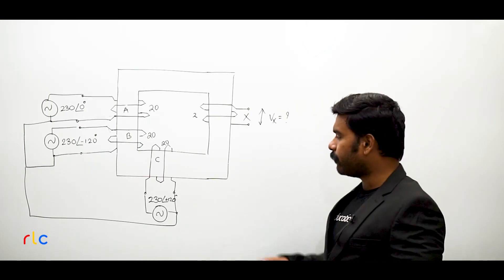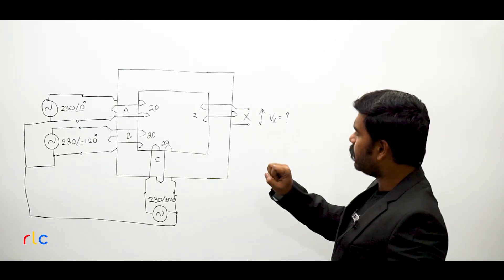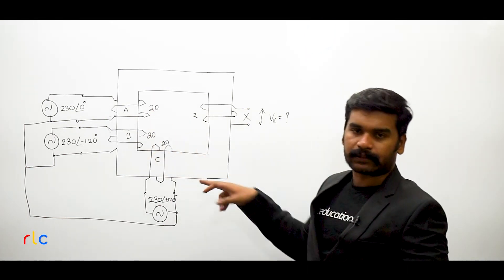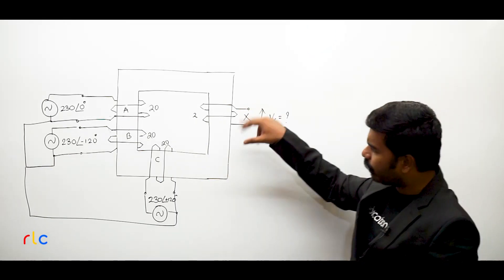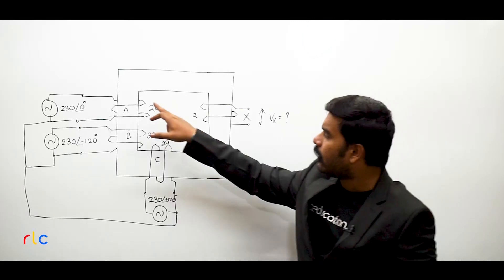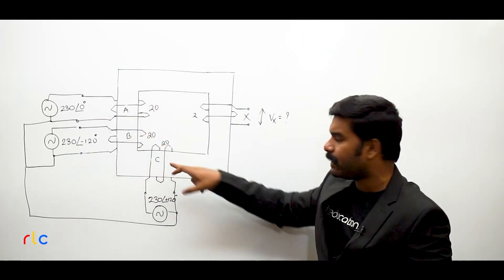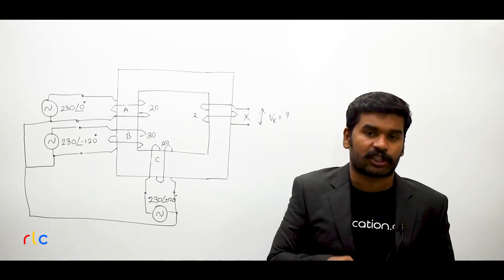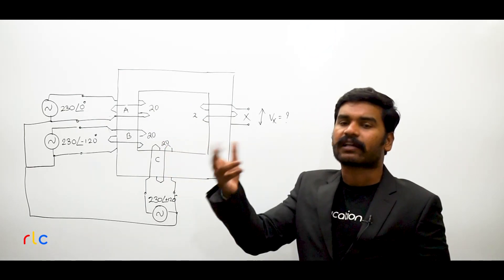The first question I have taken from the transformer. This is a very interesting question. You have given a multi-winding transformer which is having four sets of windings. Three of the windings A, B, C are energized from a balanced three-phase star connected source.